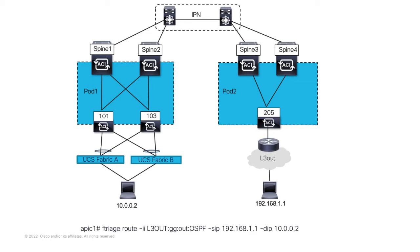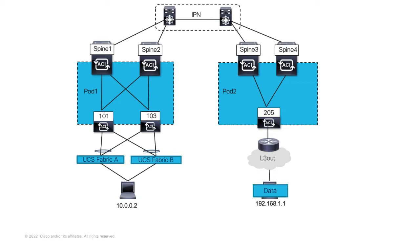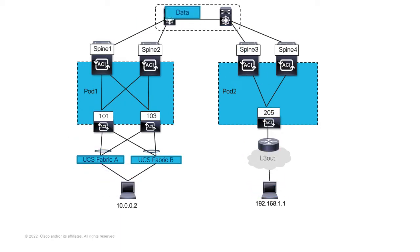Ftriage is an APIC CLI-based Python tool developed to simplify fabric troubleshooting, where the user defines parameters related to traffic flow like ingress interface, source IP address, and destination IP address. With the traffic flow information provided by the user, the tool accesses the leafs and the spine to capture real-time data plane flow as it traces the path of the packet hop by hop in the ACI fabric. Along with the ELAM, the tool also runs certain CLI commands to verify the object model to validate the control plane as well.